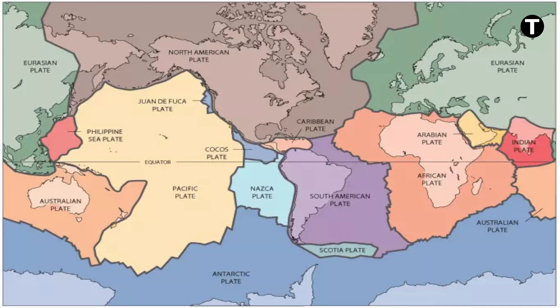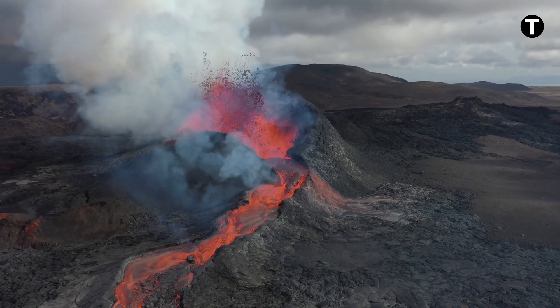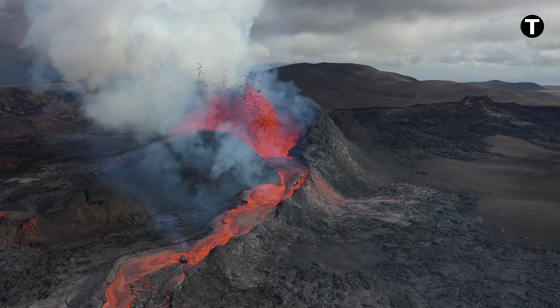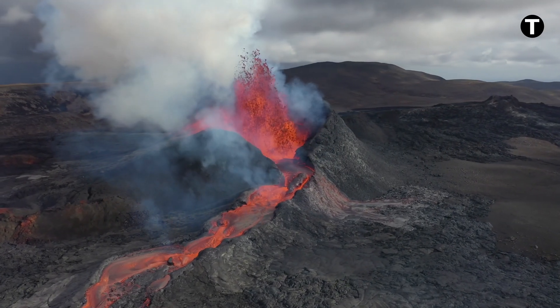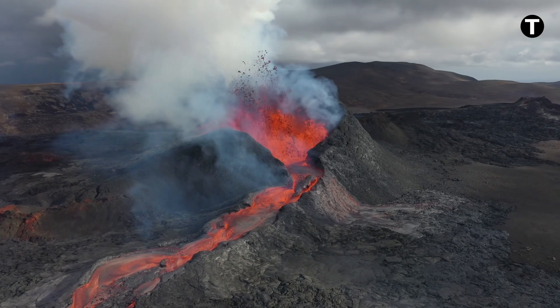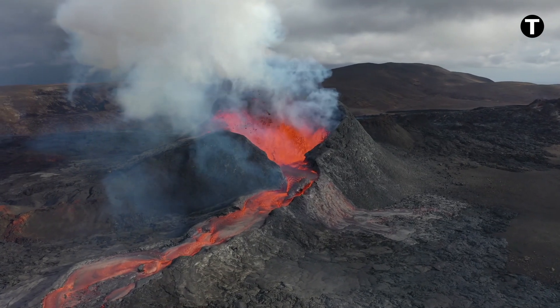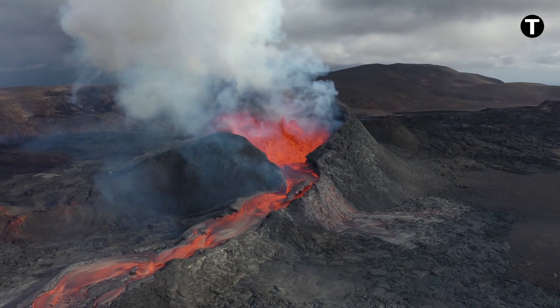Most tectonic earthquakes occur at plate boundaries, where these forces are at play. Intraplate earthquakes, on the other hand, occur within tectonic plates, away from their boundaries. These rare events are triggered by the accumulation of internal stresses within the plates. Earthquakes of volcanic origin are linked to the activity of volcanoes, resulting from the movement of magma beneath the Earth's surface, leading to seismic activity.